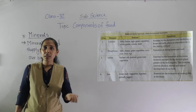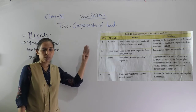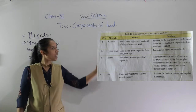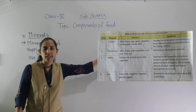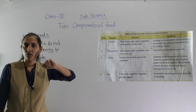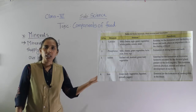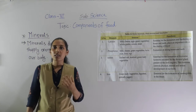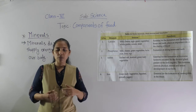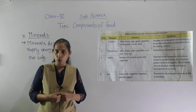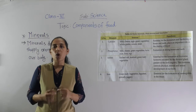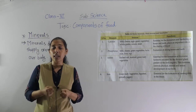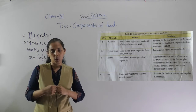The next mineral is phosphorus. We get phosphorus from milk, cheese, green vegetables, bajra, nuts, liver, and ragi. The function of phosphorus is the formation of strong bones and teeth — it forms healthy, strong bones and teeth.